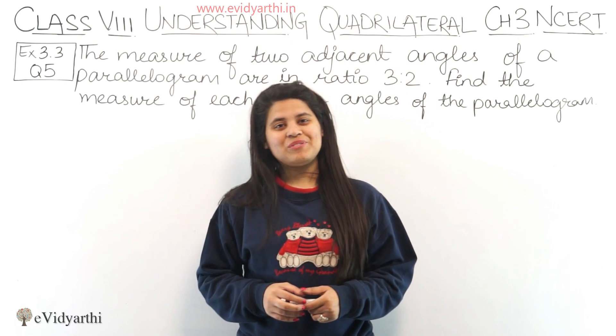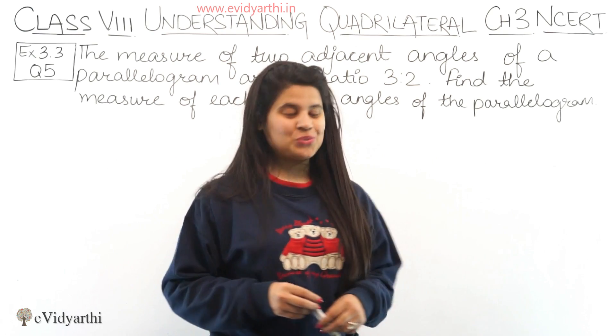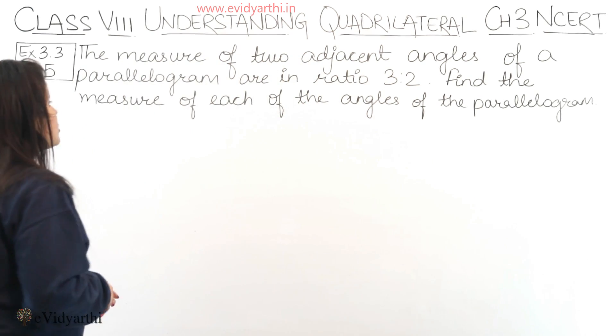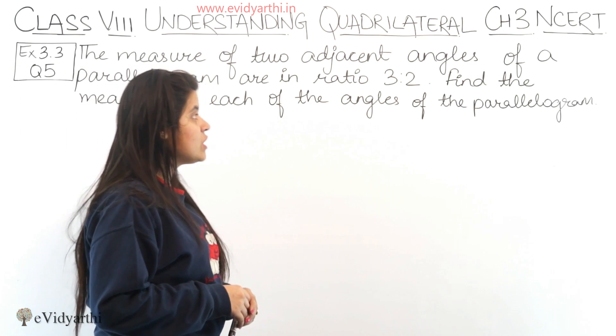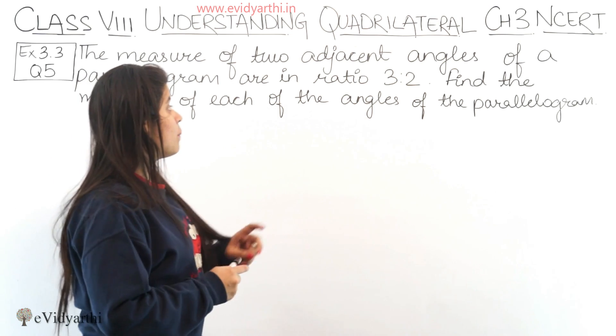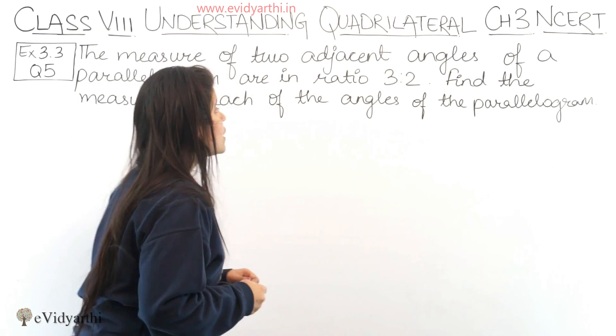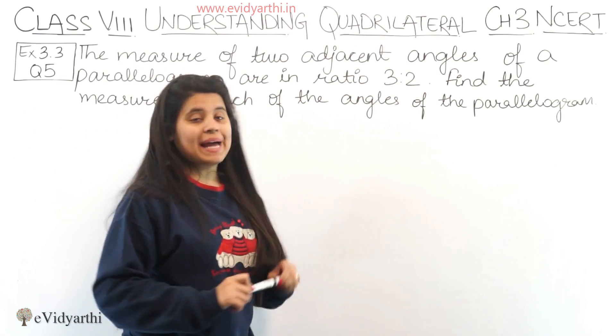Hello friends, this is Manjee from EV Dhyati Talks and now we are starting with question number 5, exercise 3.2. In this question, the measure of two adjacent angles of a parallelogram are in ratio 3 to 2. Find the measure of each of the angles of the parallelogram.